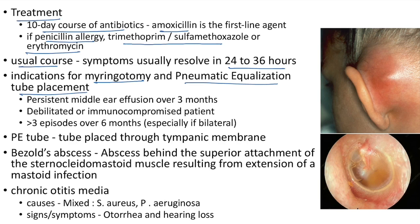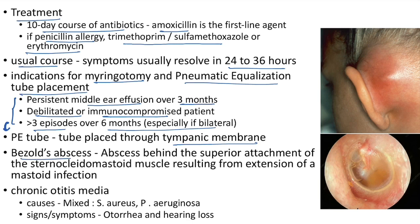Indications for myringotomy and PE tube placement in ASOM: when there is persistent middle ear effusion over three months, when the patient is debilitated or immunocompromised, and when there are greater than three episodes over six months especially if both ears are involved. A PE tube is placed through the tympanic membrane.